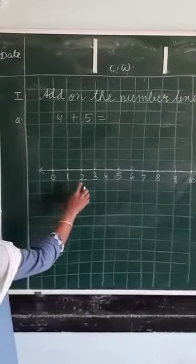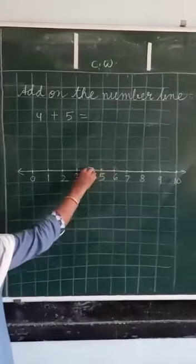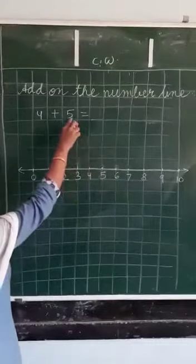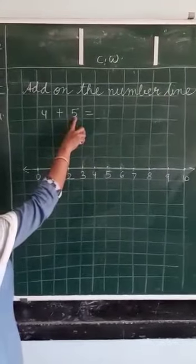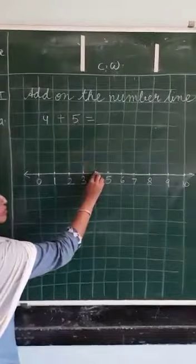0, 1, 2, 3, 4. We will start from 4. And we will take 5 small steps on the right side. Because our second number is 5. So let us start and we will take small 5 steps.